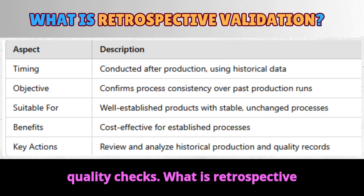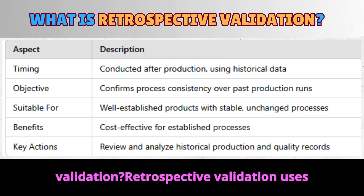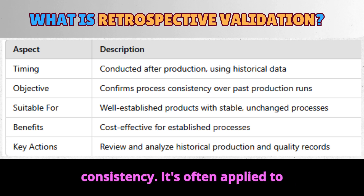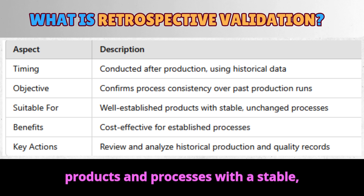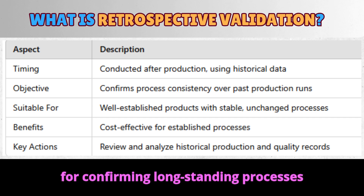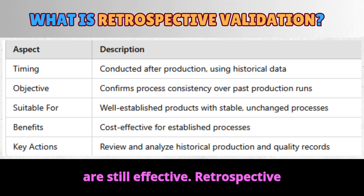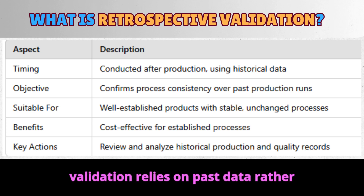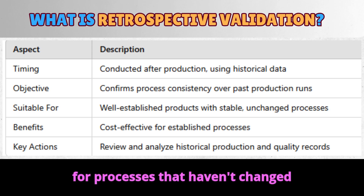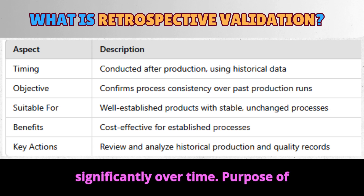What is retrospective validation? Retrospective validation uses historical production data to confirm consistency. It's often applied to products and processes with a stable, established history. This type is useful for confirming that long-standing processes are still effective. Retrospective validation relies on past data rather than new testing. It's especially suited for processes that haven't changed significantly over time.